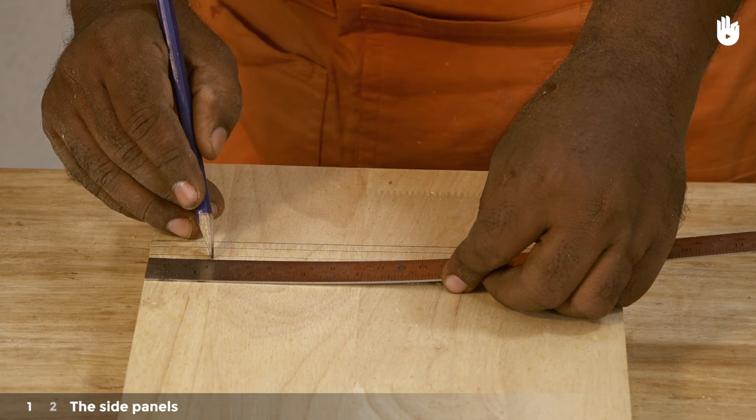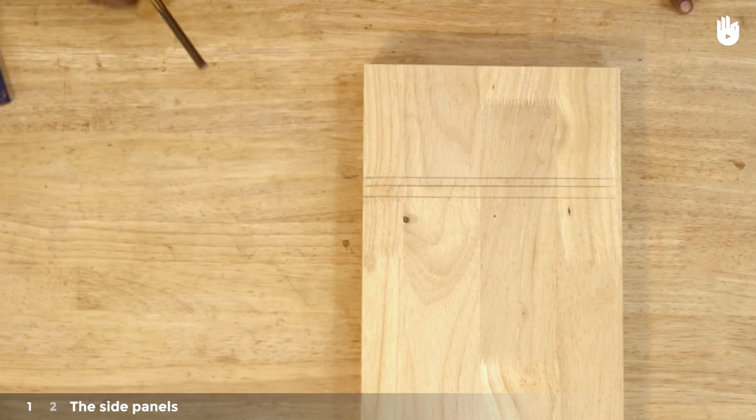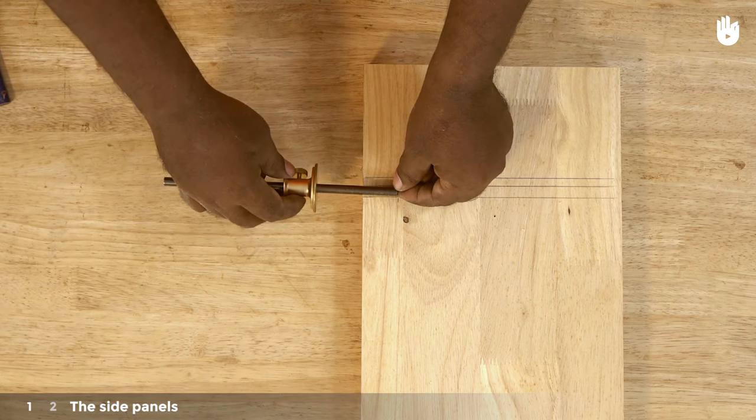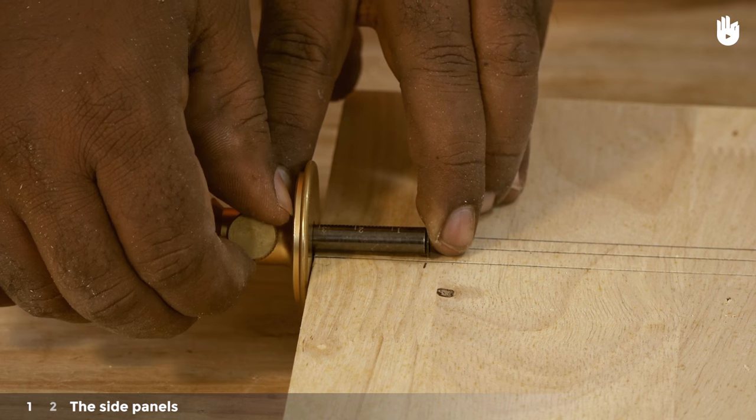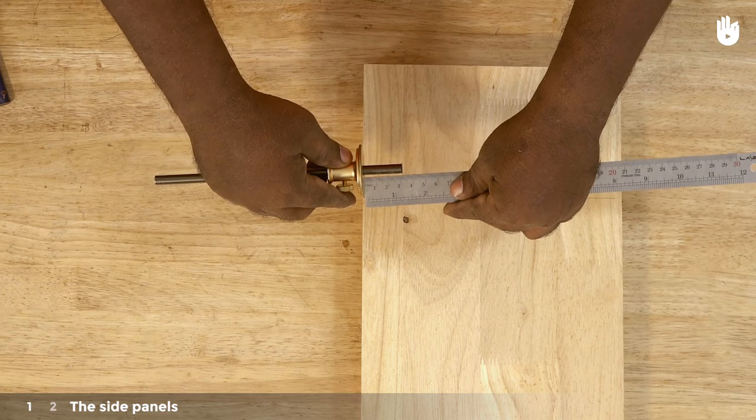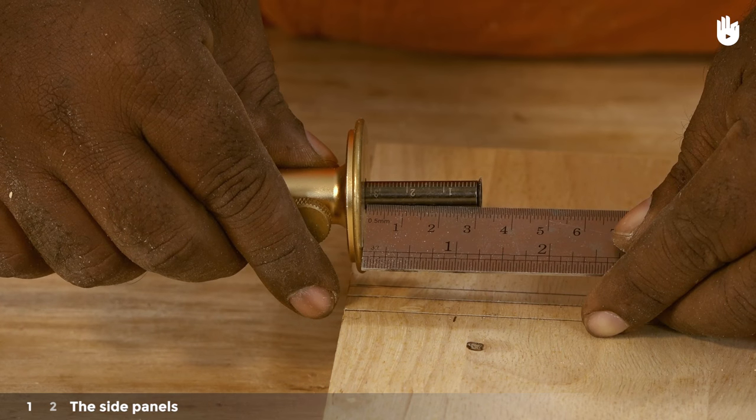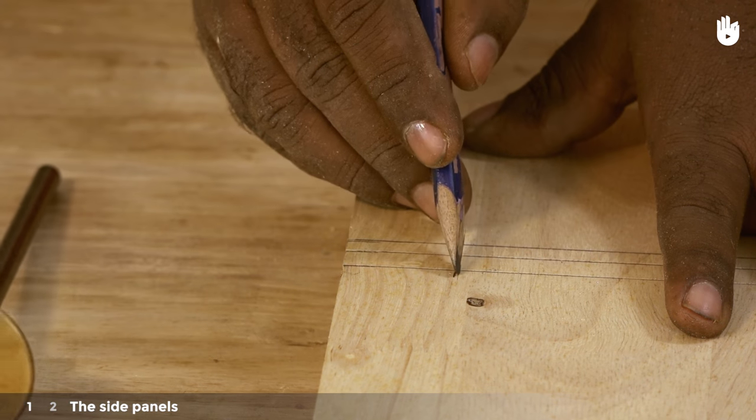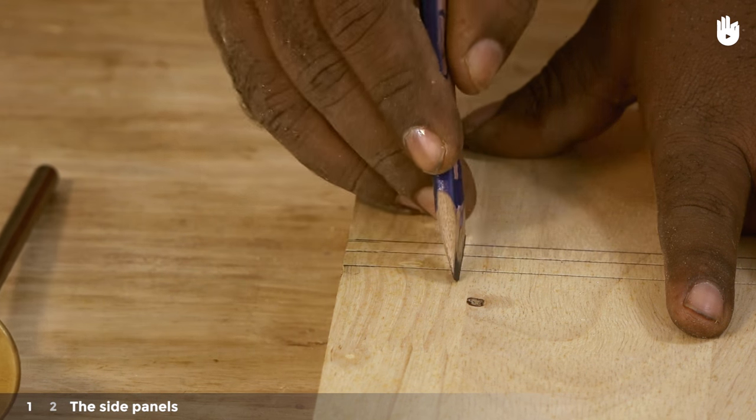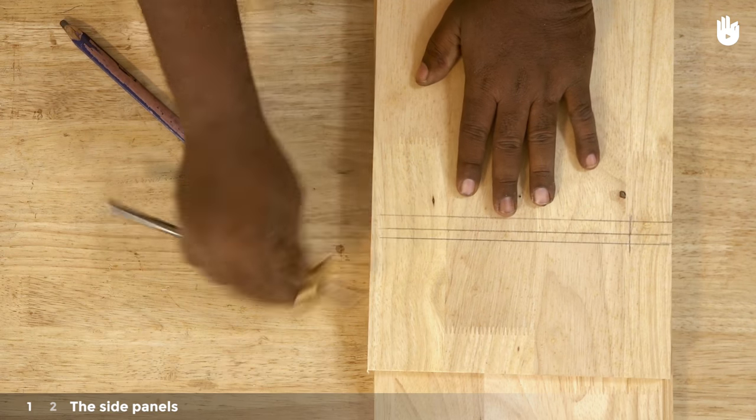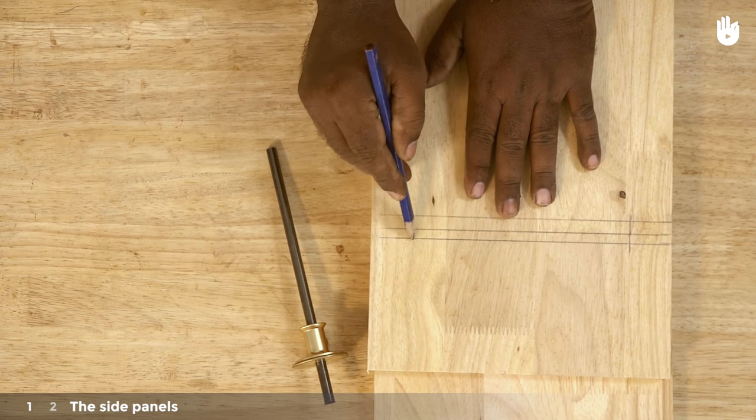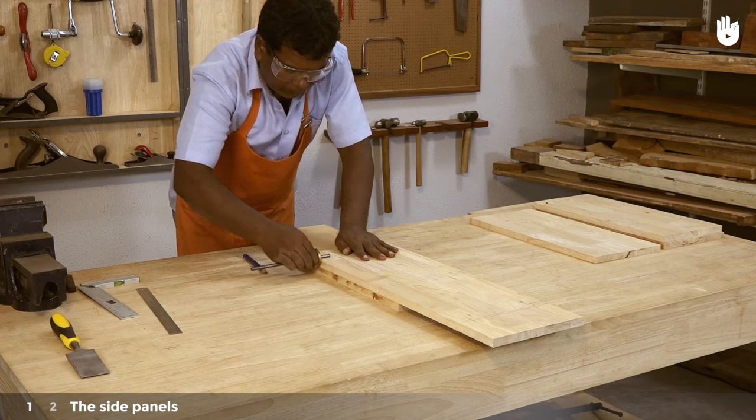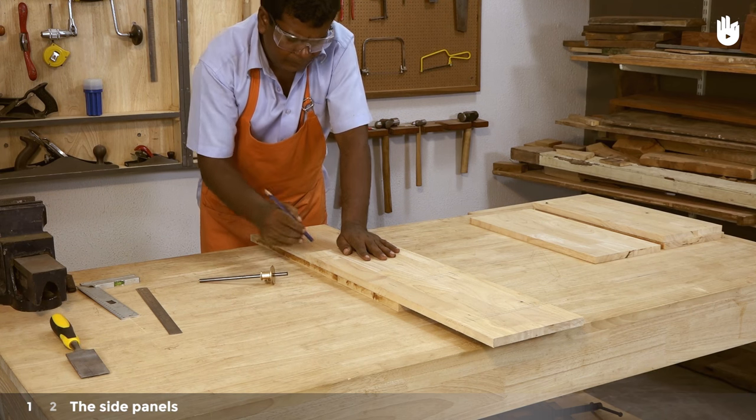Set a marking gauge to 3 cm. Now, from either edge of the side panel, proceed to mark the ends of the mortises that will hold each of the three shelves. Highlight each with a pencil. Do the same for the mortises on the second side panel as well.